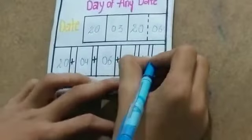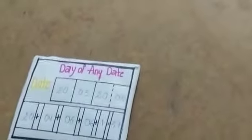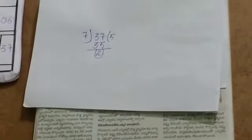We have to divide it, 37. We have to divide with 7 because the days are 7 only. 37 divided by 7 equals 5, and the remainder is 2.